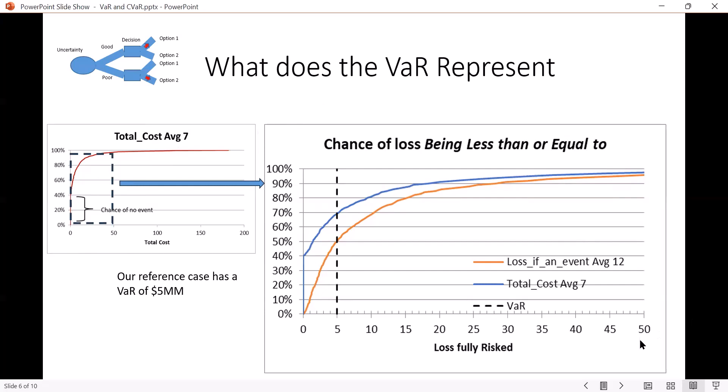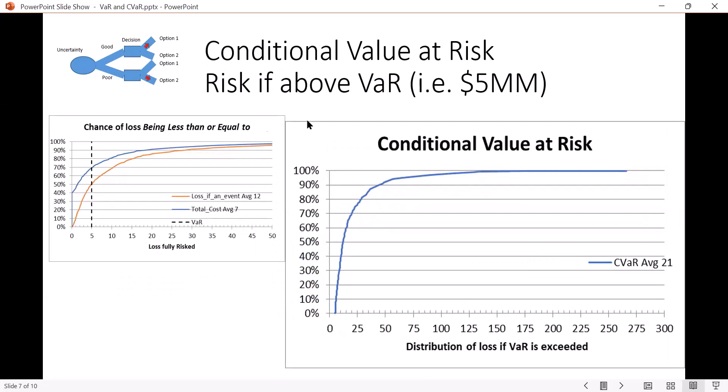Now we said we had a VaR of five. So here's the VaR of five. And you can see that the total cost curve, there's really only about a 30% chance that we're going to exceed the VaR when I consider the 40% chance that nothing happens.